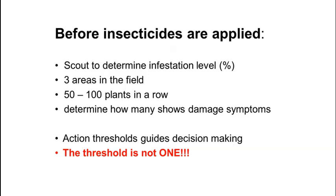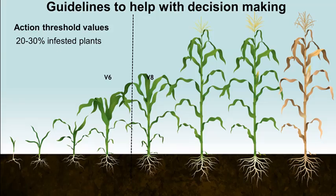The most important message is that the threshold for chemical control is not one. The age of the plant should also be taken into account when decisions are made regarding chemical control. Although this seems very high, throughout the world the action threshold for fall armyworm is between 20 and 50 percent. On the conservative side we can say 20 to 30 percent.